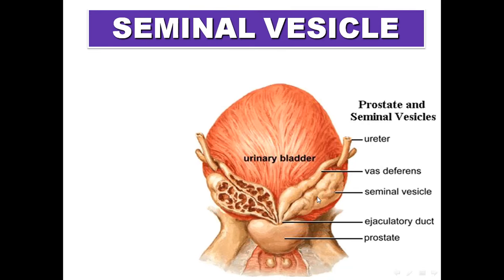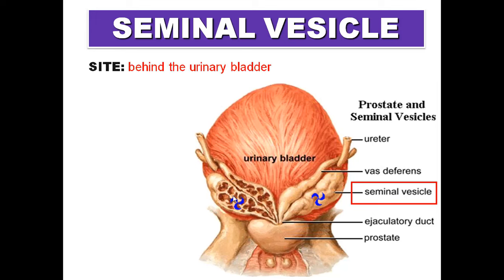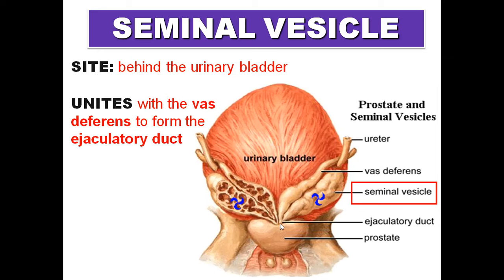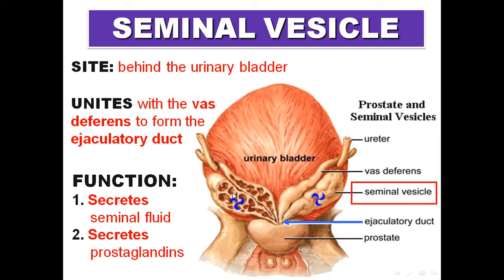The seminal vesicles are located behind the urinary bladder. The duct of each seminal vesicle fuses with the vas deferens to form the ejaculatory duct. The functions of the seminal vesicle are secretion of seminal fluid and secretion of prostaglandins. Note that the seminal vesicle does not store sperms — sperms are stored in the epididymis.